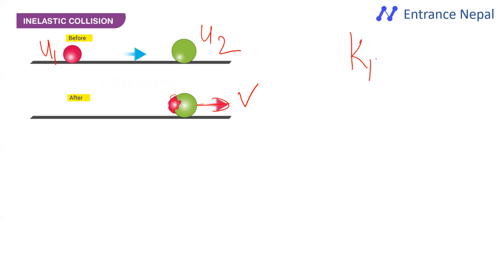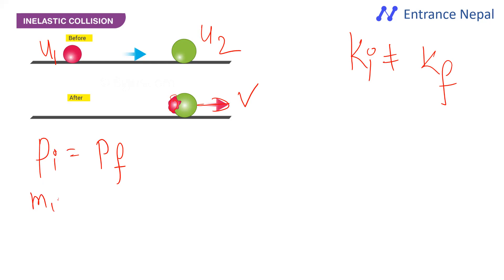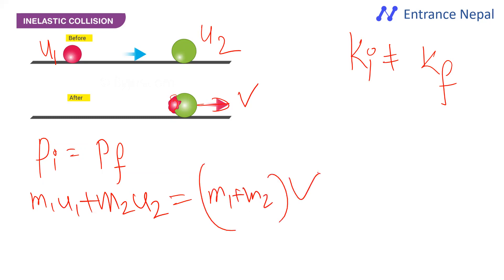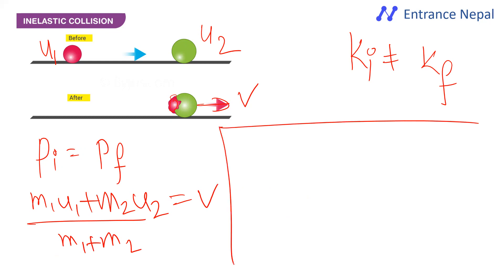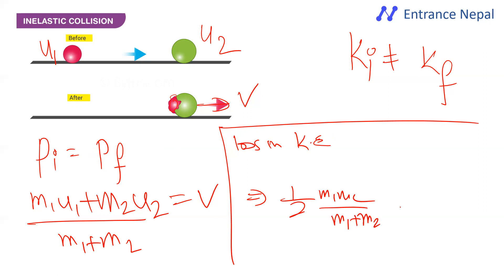In a perfectly inelastic collision, kinetic energy is not conserved — there is a loss in kinetic energy. The common velocity is: v = (m₁u₁ + m₂u₂)/(m₁ + m₂). The loss in kinetic energy is: ΔKE = ½ × m₁m₂/(m₁ + m₂) × (u₁ − u₂)².